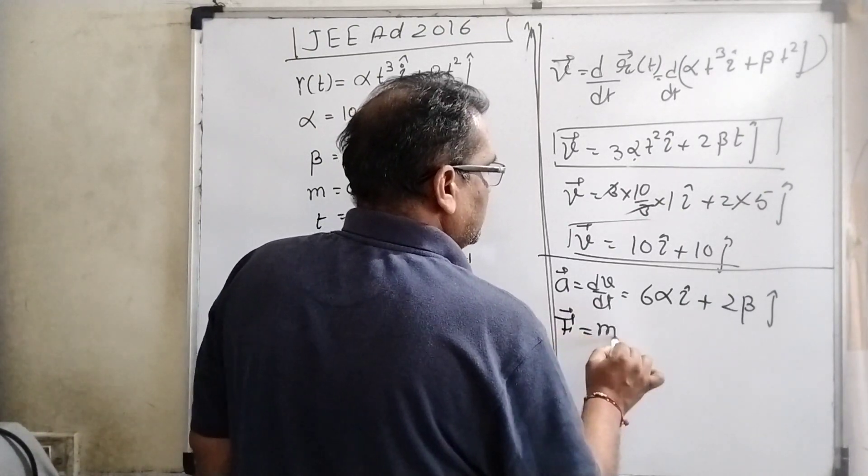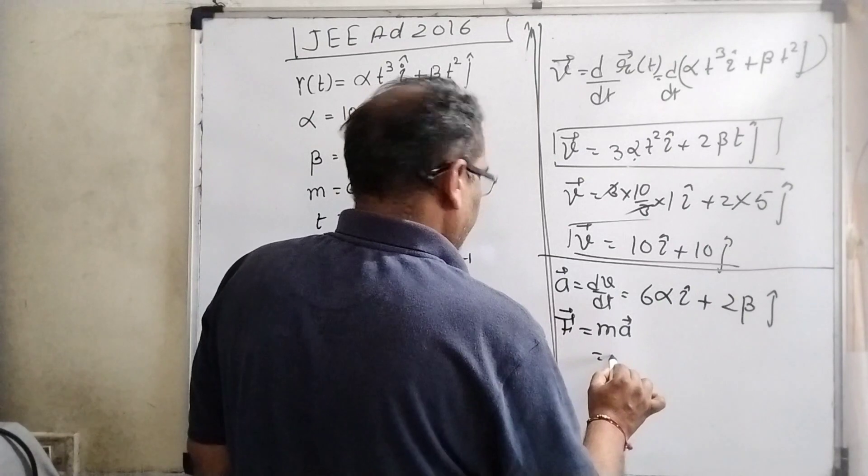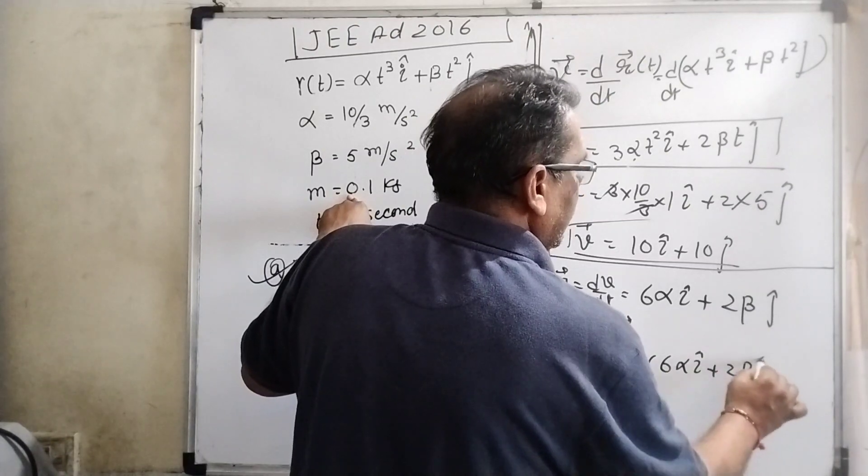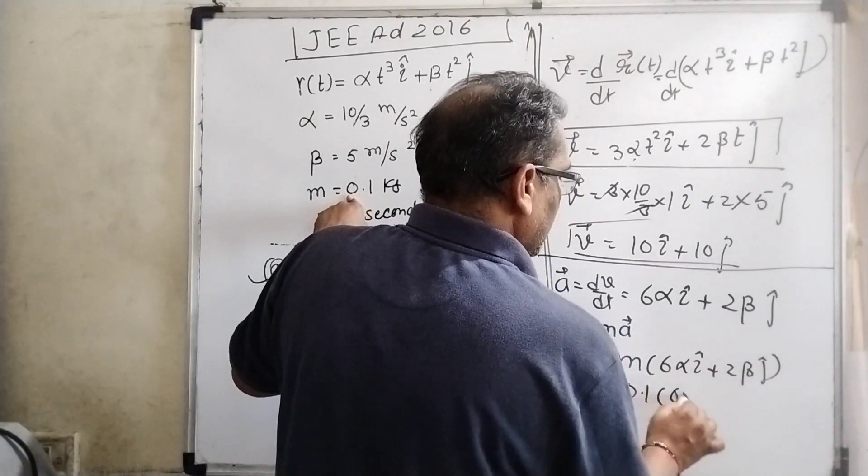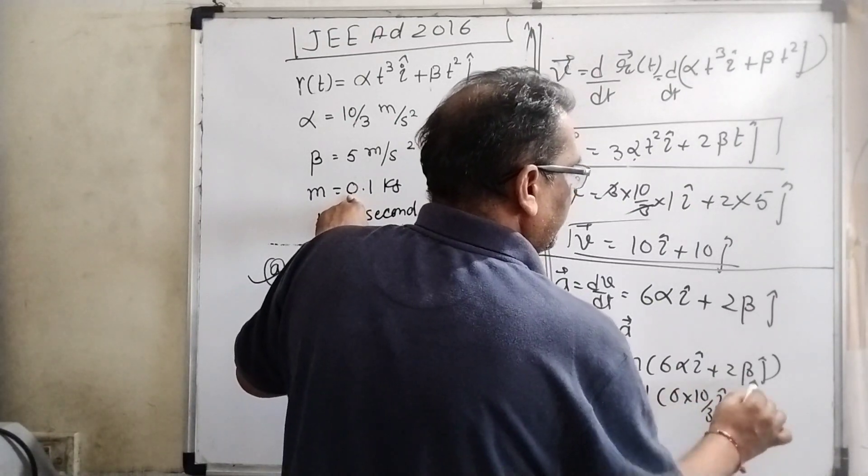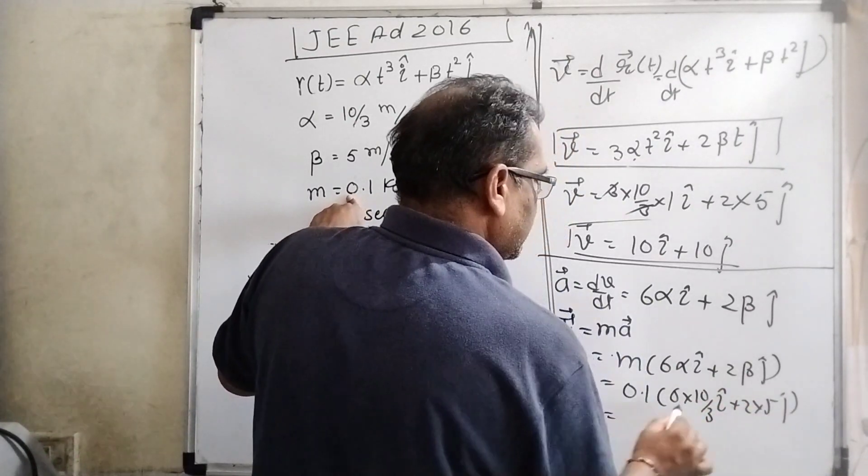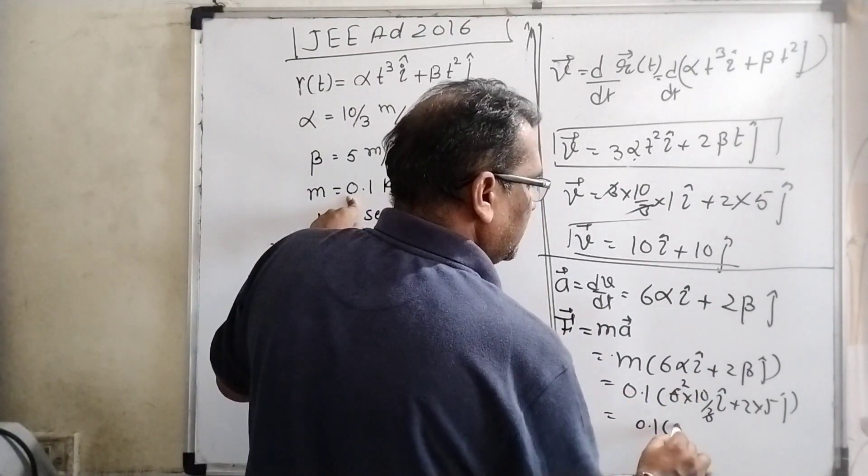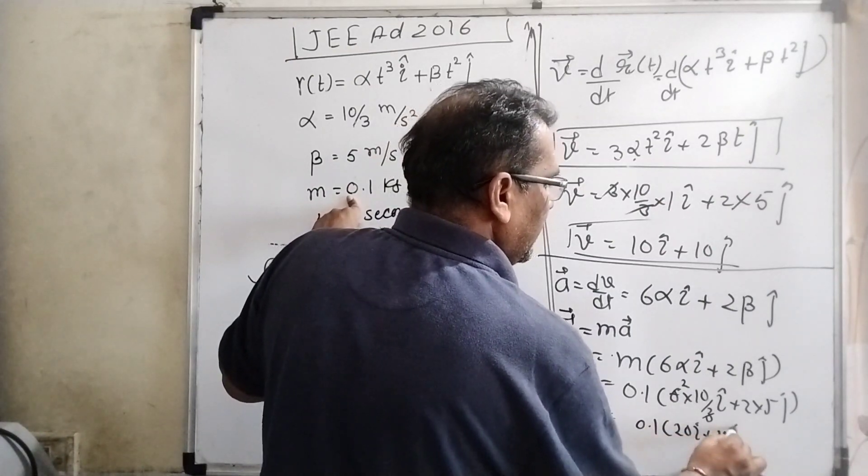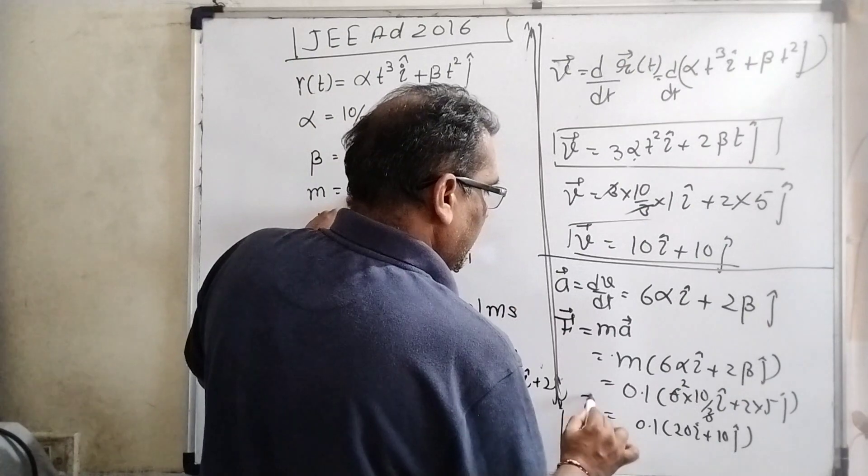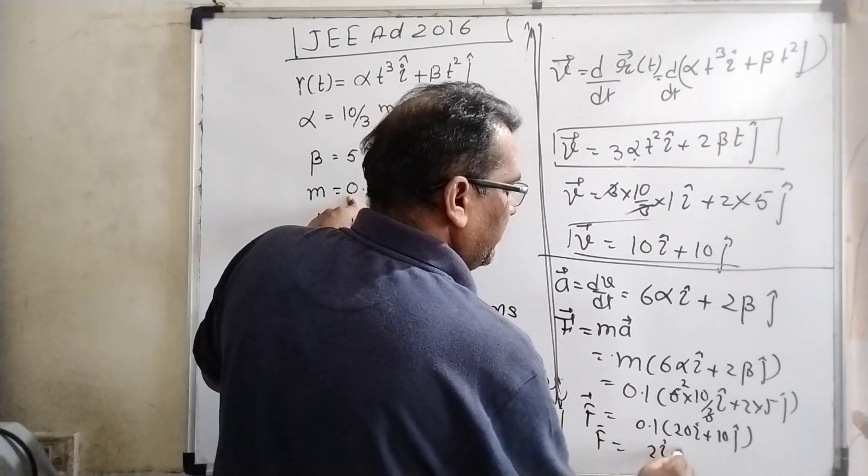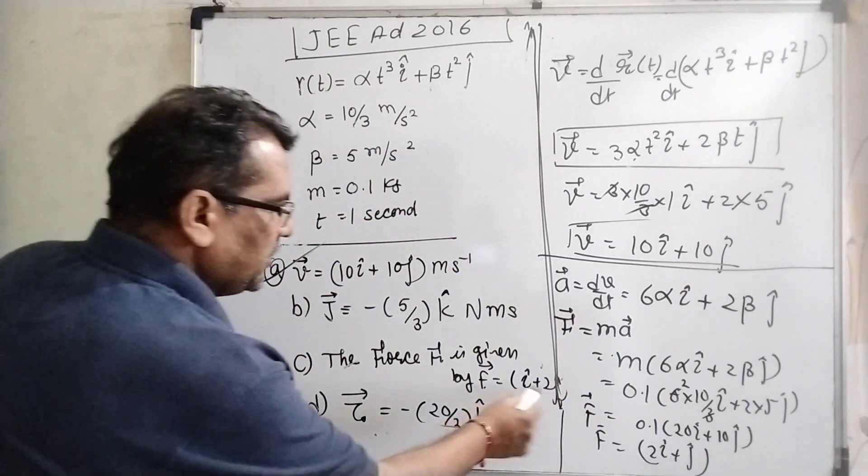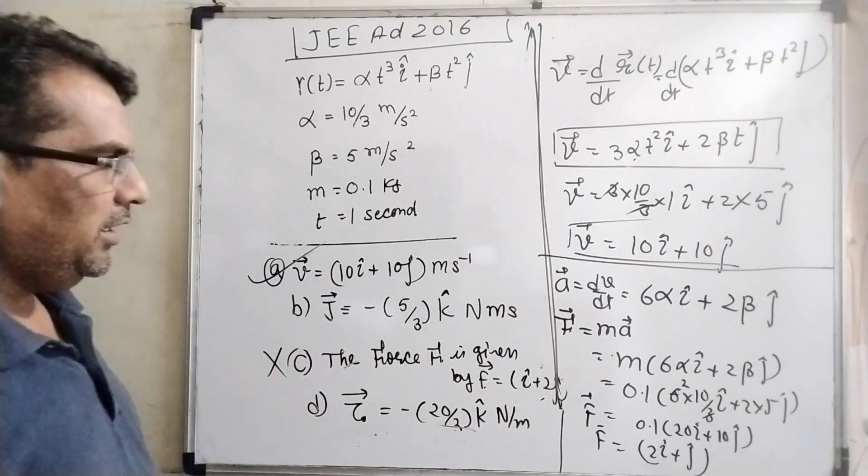You are well known that force we have to find out. Force equals mass into acceleration, then multiply by m. m equals 6α i plus 2β j. Now substitute all the values: m is 0.1, α is 10/3, β is 5. Then you will get 2i + j. Now let's see here: i + 2j. Therefore, C is incorrect.